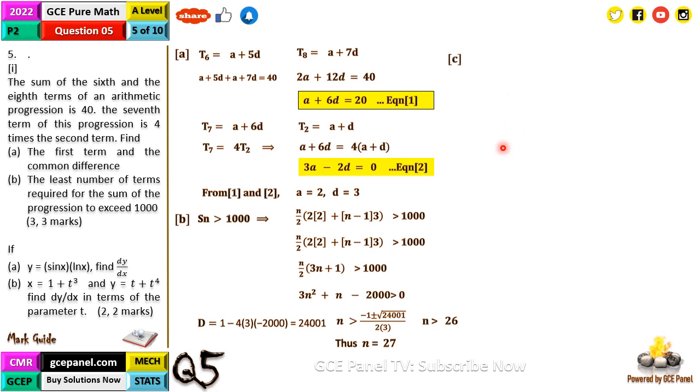So given that y equals sine x ln x, so this is a composite function with products. So here we are going to apply the product rule. And we keep, we hold sine x and differentiate ln x. That gives us 1 on x plus ln x now times the derivative of sine x which is cos x.